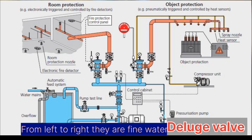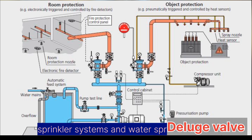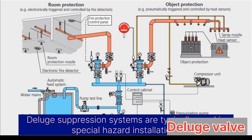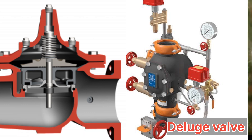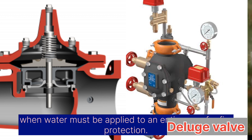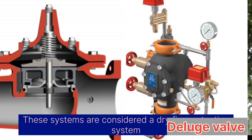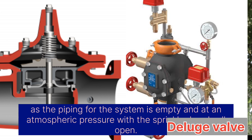From left to right, they are fine water spray systems, sprinkler systems, and water spray systems. Deluge suppression systems are typically used in special hazard installations when water must be applied to an entire area for fire protection. These systems are considered a dry fire protection system, as the piping for the system is empty and at atmospheric pressure with the sprinkler heads all open.